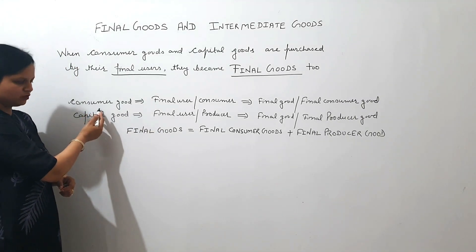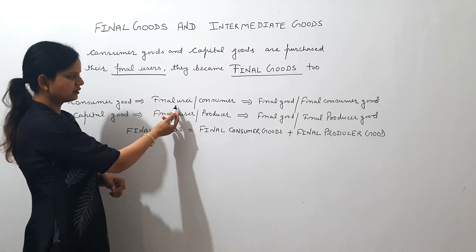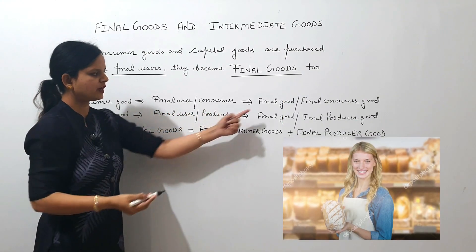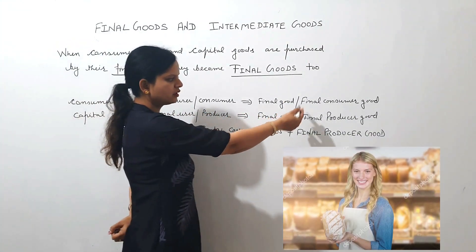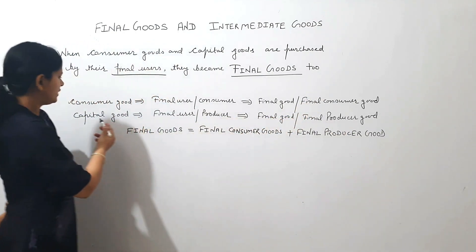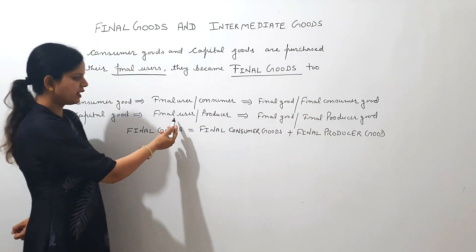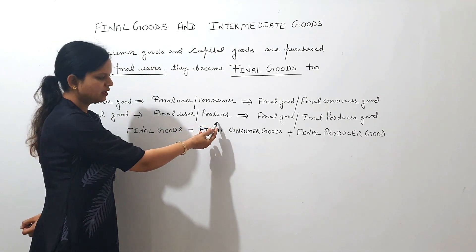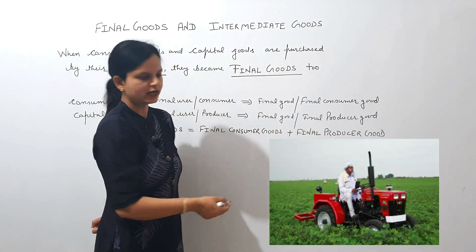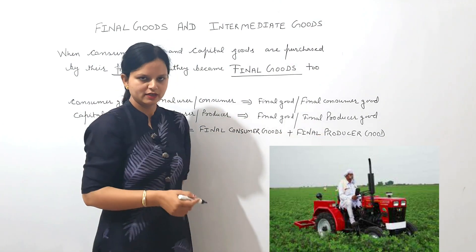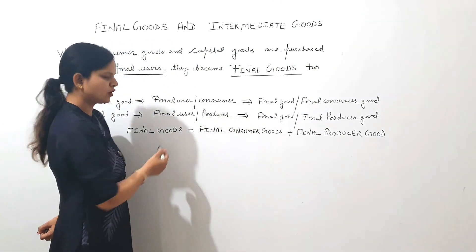When a consumer good is purchased by its final user, that is the consumer, it becomes a final good — we can call it a final consumer good. When a capital good is purchased by its final user, that is the producer, it becomes a final good — we can call it a final producer good.